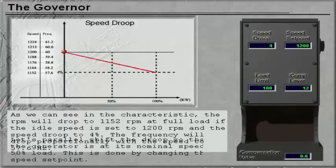Let's parallel shift the droop so that the generator is at its nominal speed at 50% load. This is done by changing the speed set point.